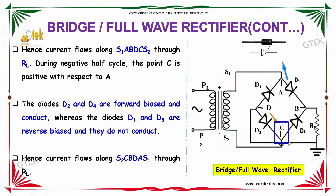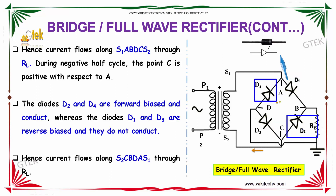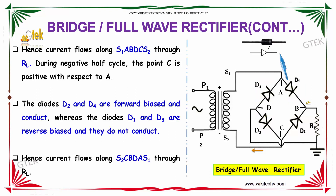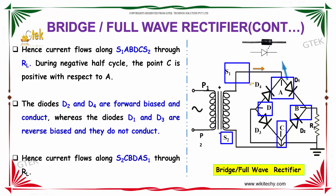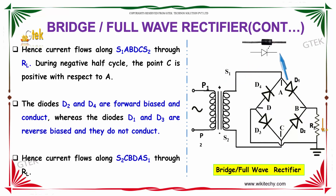During the negative half-cycle, the point C is positive with respect to A. The diodes D2 and D4 are forward biased and conduct, whereas the diodes D1 and D3 are reverse biased and do not conduct. So, the current flows from S2, C, B, D, A, and S1 through the resistance RL.